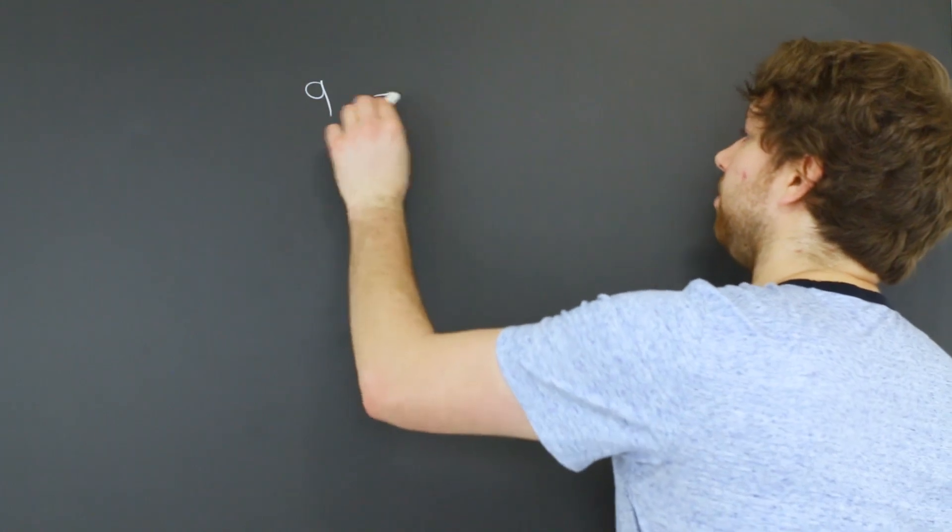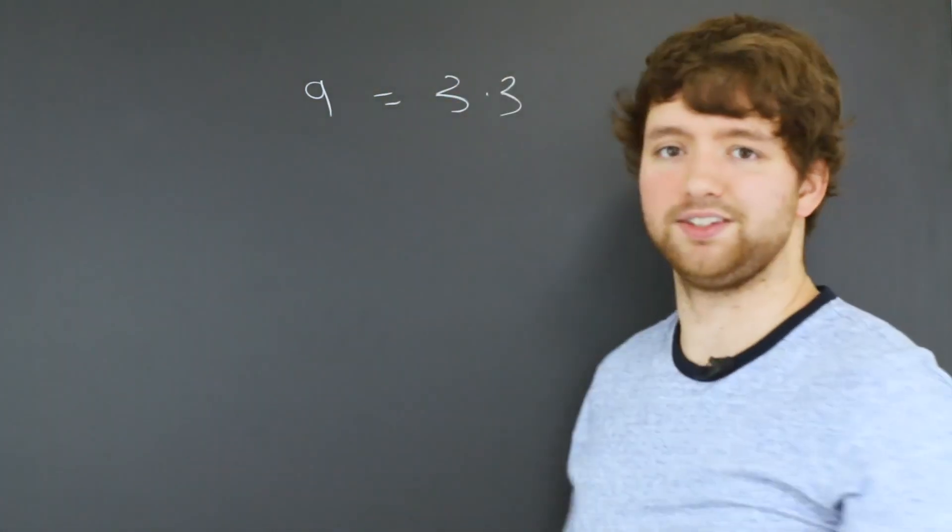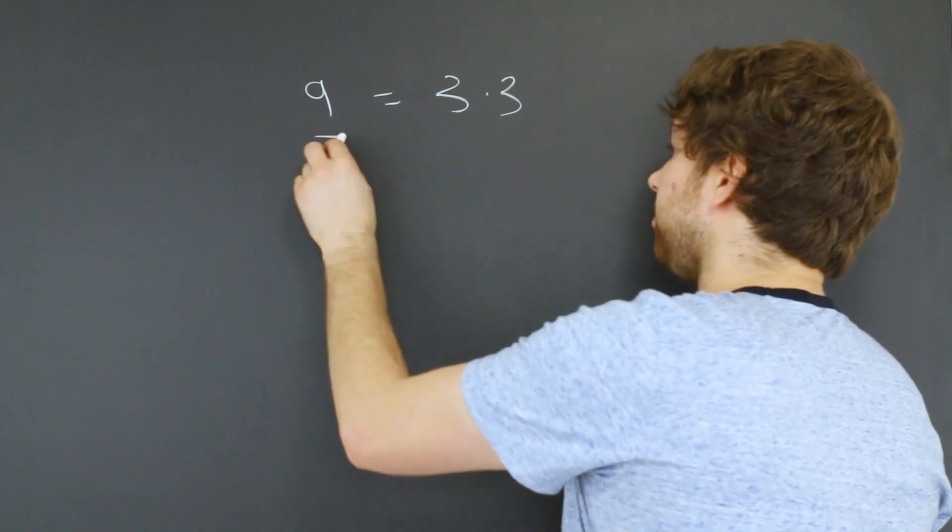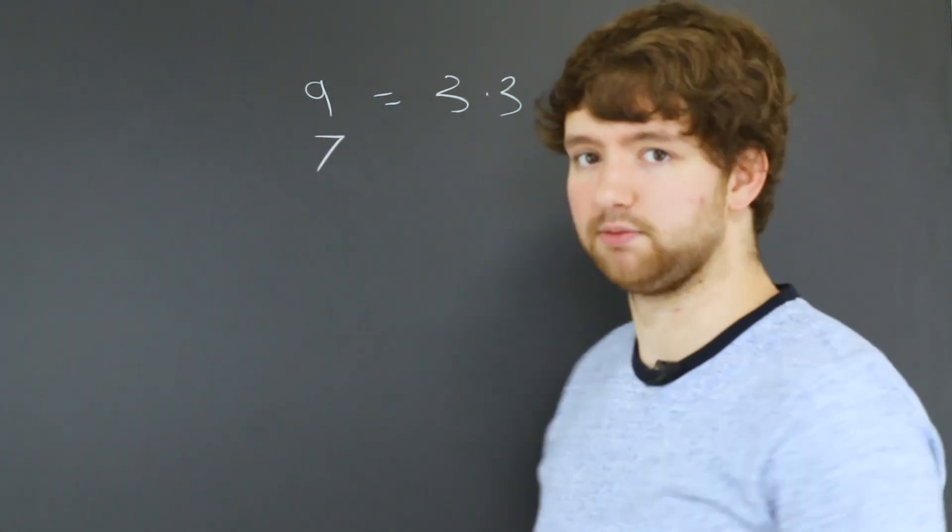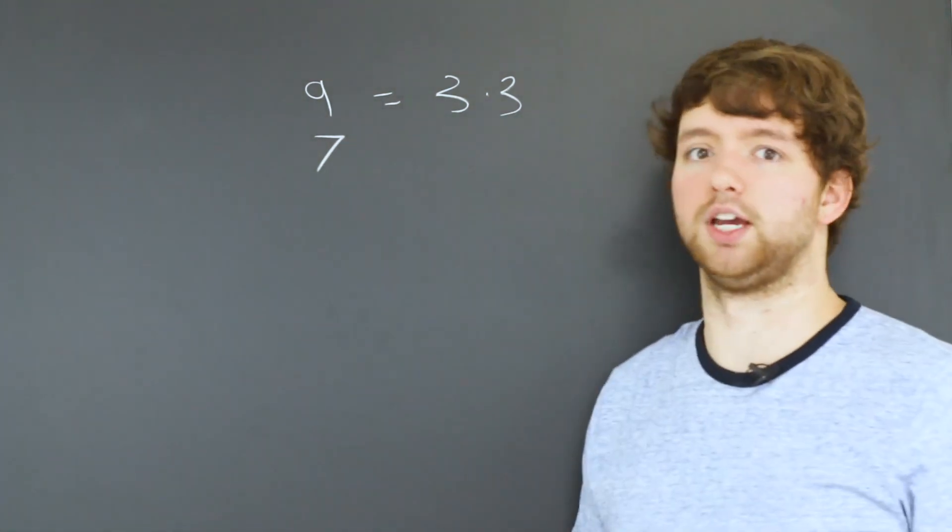A prime number is something that can't be divided into another whole number. So for example, if we have the number nine, well, this is actually just three times three. So it's not a prime number. Seven on the other hand, if you go from seven down to zero and try to divide seven by that number, you're never going to get a whole number.